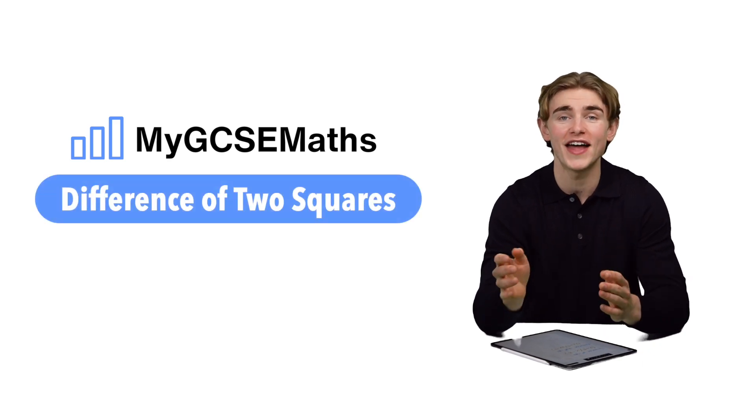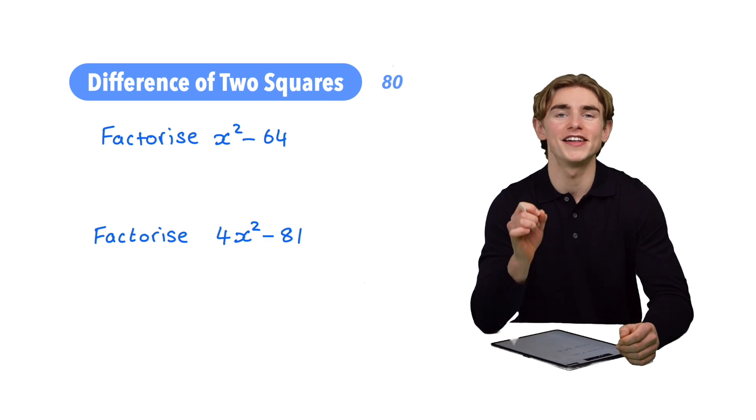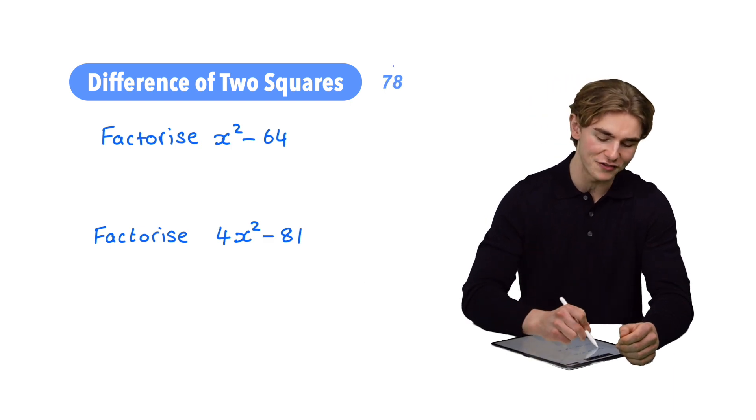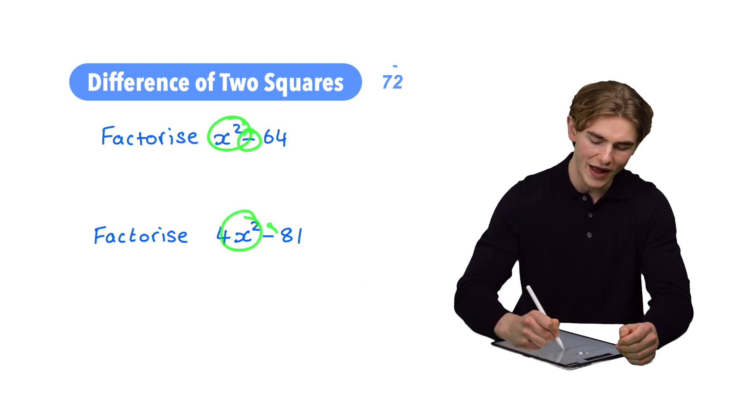How to use the difference of two squares in 82 seconds? Let's go. The difference of two squares method is going to be super useful whenever we have to factorize an expression which involves one square term subtract another square term.